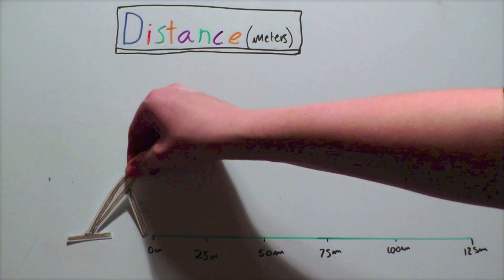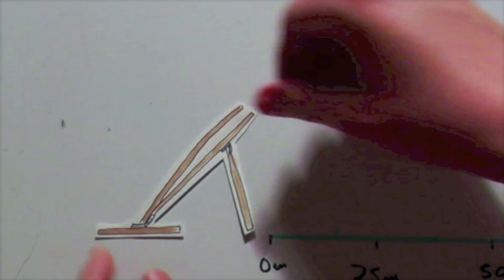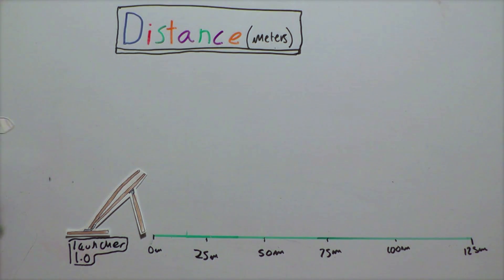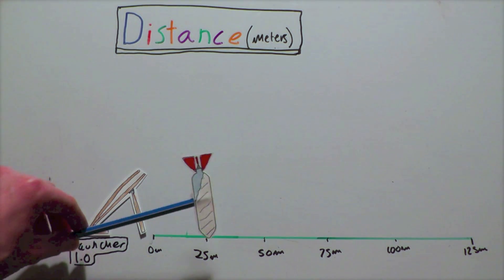The old launcher is, well, a bit crap. It was built really badly and was made in an hour. Because of this, it only went 25 meters.